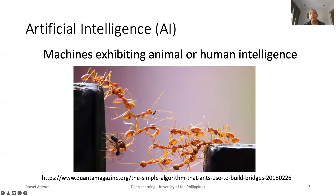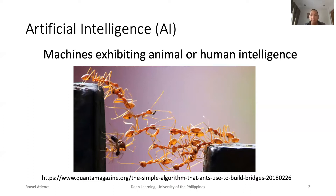Let us talk about artificial intelligence. Roughly speaking, artificial intelligence can be defined as machines exhibiting animal or human intelligence. Machines are computers that may or may not have a mechanical system or actuators such as in robotics. We include both human and animal intelligence. Generally, humans exhibit more intelligent actions compared to animals, and in the hierarchy of intelligence,